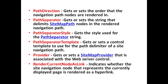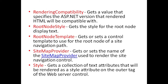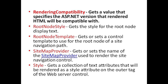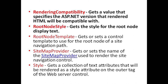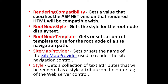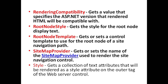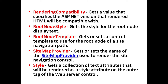RenderCurrentNodeAsLink indicates whether the site navigation node that represents the currently displayed page is rendered as a hyperlink. RenderCompatibility is used to get a value that specifies the ASP.NET version that the rendered HTML will be compatible with. RootNodeStyle gets the style for the root node display text. RootNodeTemplate is used to get or set a control template to use for the root node of a site navigation path. StyleProperty is used to get a collection of text attributes that will be rendered as a style attribute on the outer tag of the web server control.